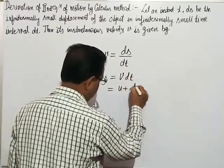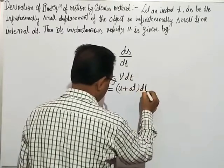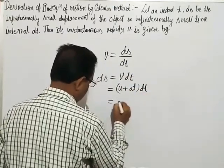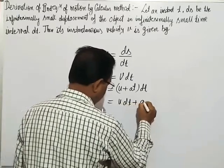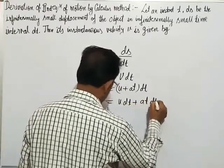v = u + at. So ds = (u + at)dt, which expands to ds = u dt + at dt.